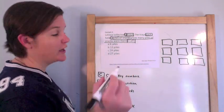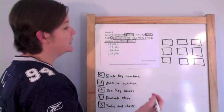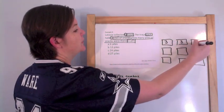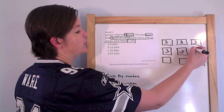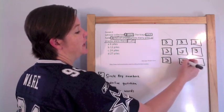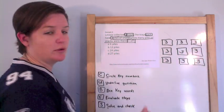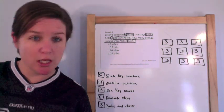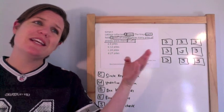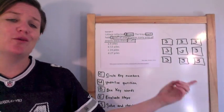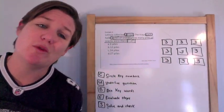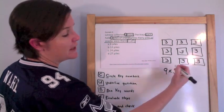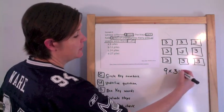Latoya collected nine trays; on each tray there were three piles. This looks like repeated addition — three plus three plus three... nine times. Or, being a really awesome third grader, we know that repeated addition is the same as multiplication: nine times three.